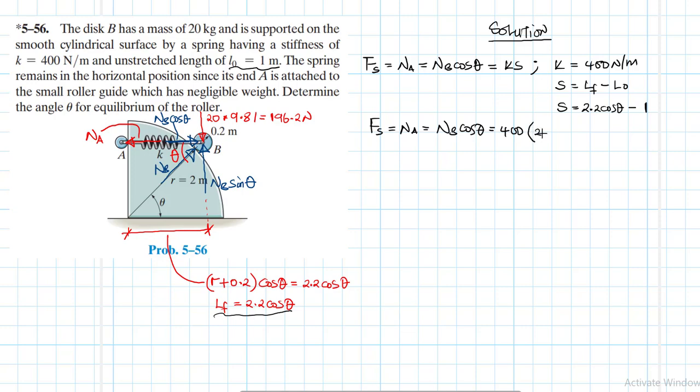K has already been given as 400 newtons per meter. S is going to be equal to final length of the spring minus original length, and therefore this is going to be equal to 2.2 cos theta minus 1.